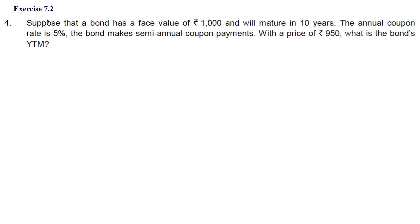Now let us continue with the exercise questions from Exercise 7.2 of the CBSE handbook. The fourth question: suppose that a bond has a face value of rupees 1000 and will mature in 10 years. The annual coupon rate is 5%. The bond makes semi-annual coupon payments with a price of rupees 950. What is the bond's yield to maturity?